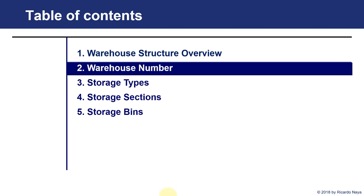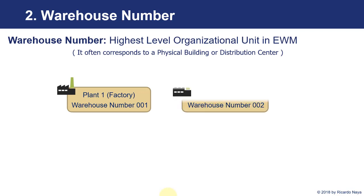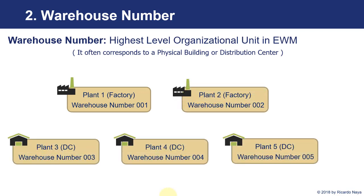We are going to see now the different objects or the different organizational units of this structure. The first one in EWM, as we saw, is the warehouse number. The warehouse number is the highest level organizational unit in EWM. Normally it corresponds to a physical building, or if some physical buildings are close together, we can use the same warehouse number for managing them. So we can have as many warehouse numbers for an organization as different buildings or different groups of buildings we want to manage.